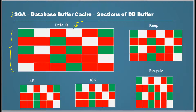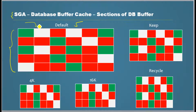So if we go into the database buffer cache, this would be the default configuration. On a high level, data gets read into that, and anything that is not frequently accessed or anything that becomes cold gets aged out.